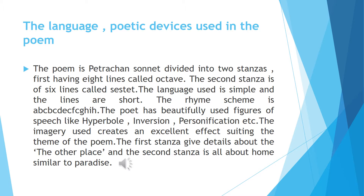The poem is a Petrarchan sonnet divided into two stanzas. The first stanza has eight lines called the octave. The second stanza is of six lines called the sestet. The language used is simple and the lines are short. The rhyme scheme is AB, CB, CD, EC, FC, GH, and IH. The poet has beautifully used figures of speech like hyperbole, inversion, and personification.